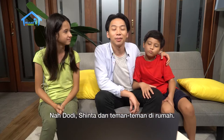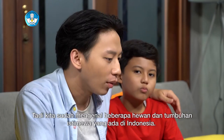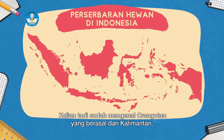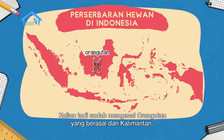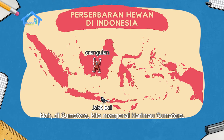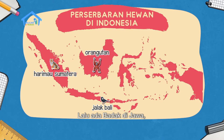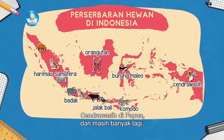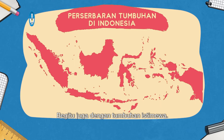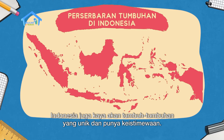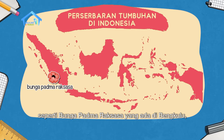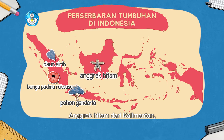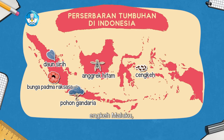Nah Dodi, Sinta, dan teman-teman di rumah. Tadi kita sudah mengenal beberapa hewan dan tumbuhan istimewa yang ada di Indonesia. Kalian sudah mengenal orangutan dari Kalimantan, lalu ada jalak Bali dari Bali. Di Sumatera kita mengenal harimau Sumatera, lalu ada badak di Jawa, burung maleo di Sulawesi, komodo di NTT, cendrawasih di Papua, dan masih banyak lagi. Begitu juga dengan tumbuhan istimewa: bunga patma raksasa di Bengkulu, daun sirih di Riau, pohon gandaria di Jawa Barat, anggrek hitam dari Kalimantan, cengkeh dari Maluku, dan masih banyak lagi.